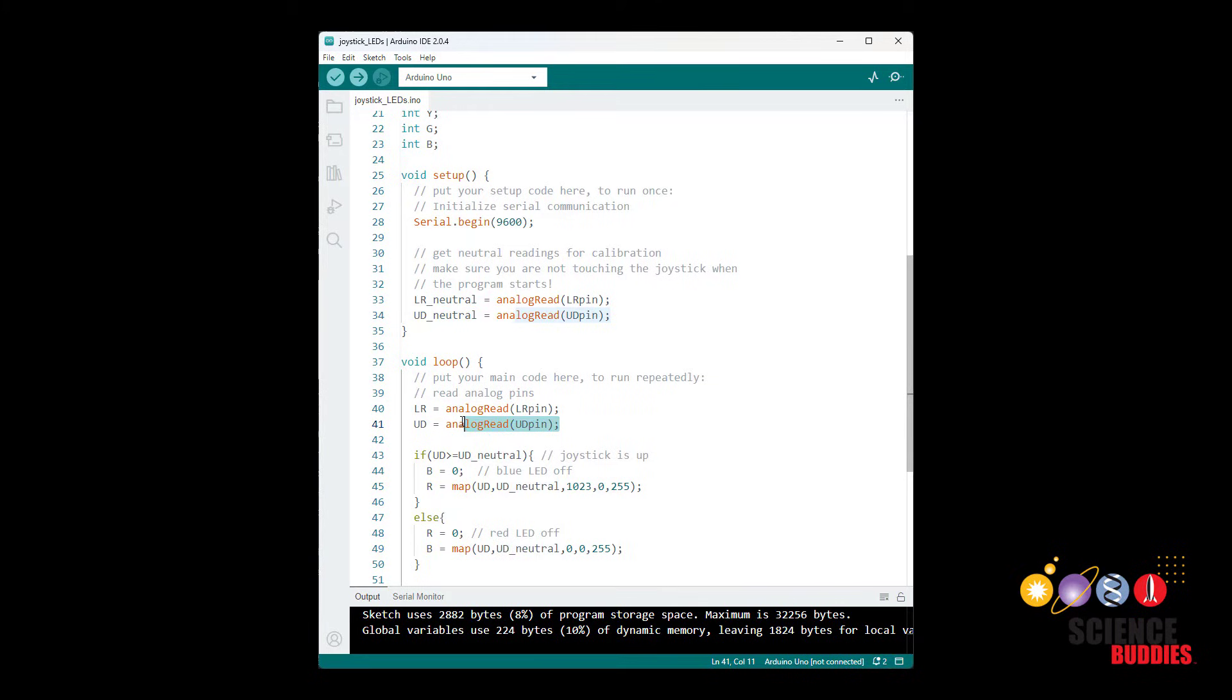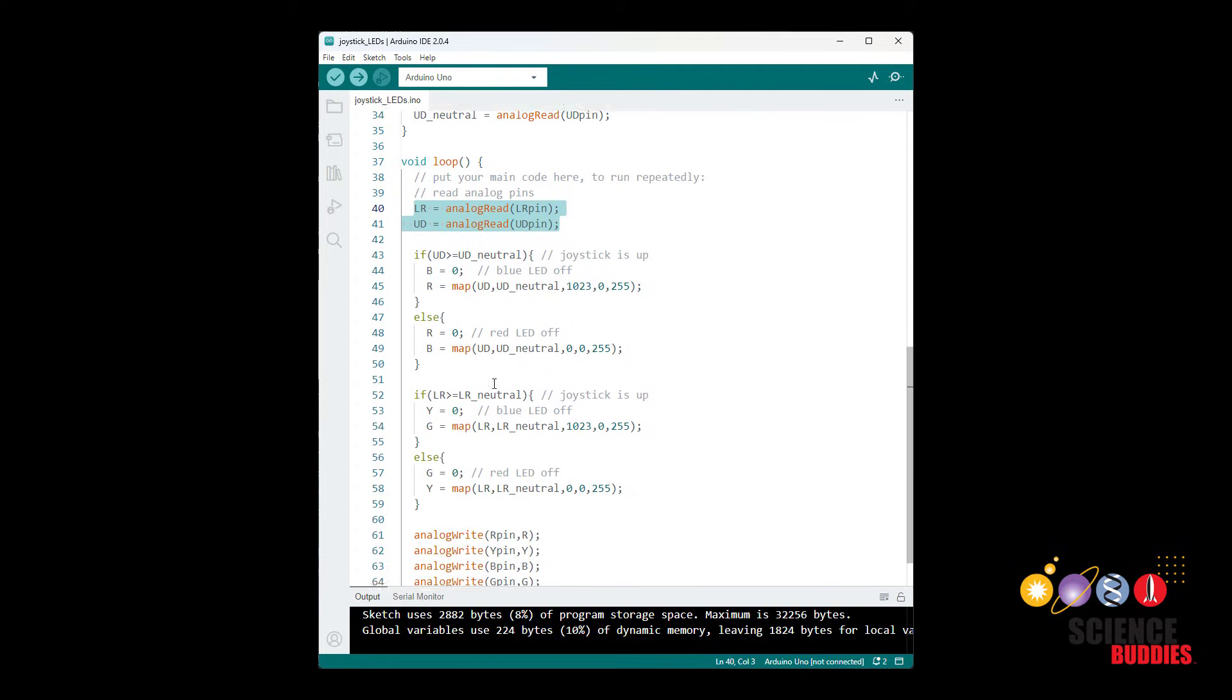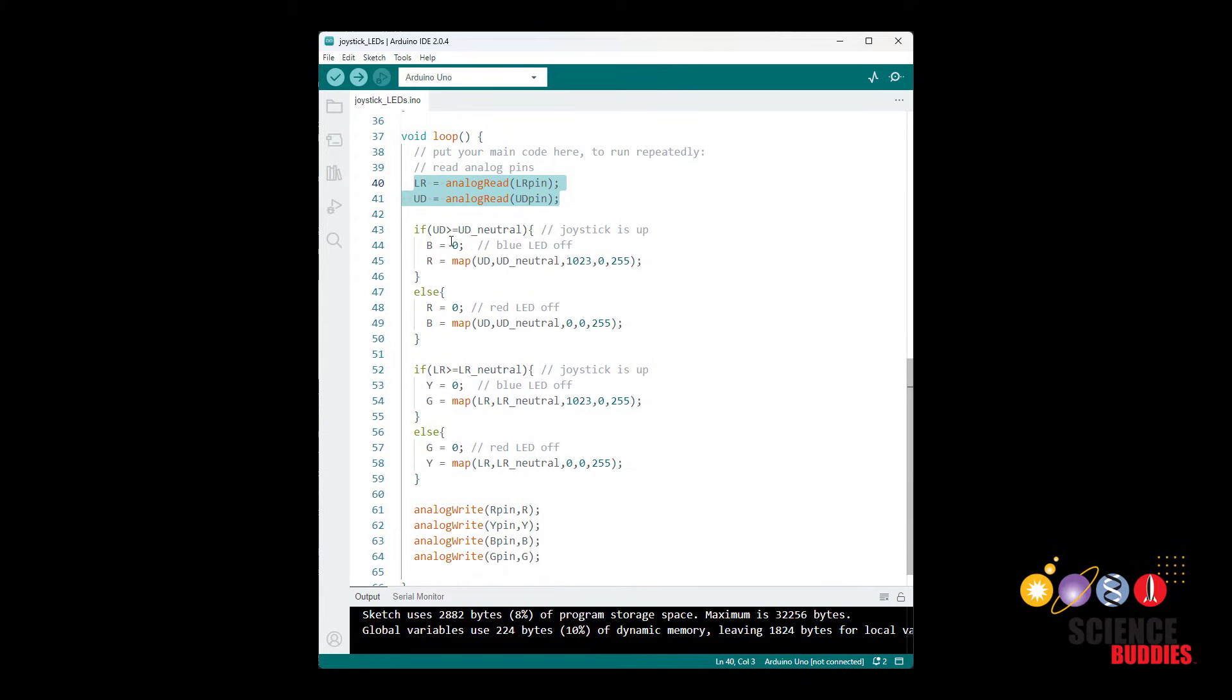Then in my loop function I am still using the analog read command to read the two values from the joystick and my code here now instead of just printing those values out I have some if else statements to use them to determine which LED should be on and what their brightness is.